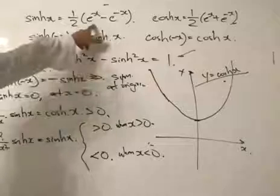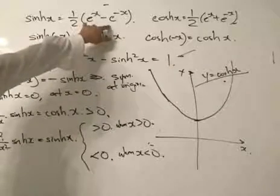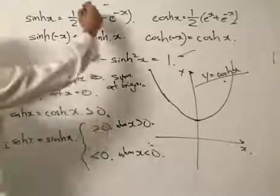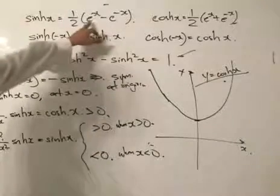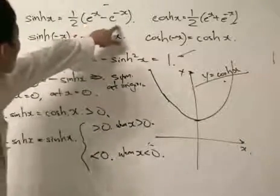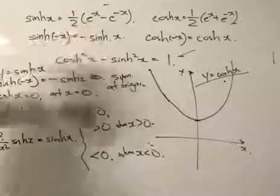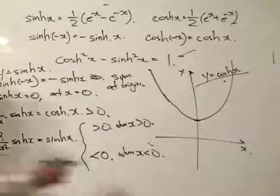So this would be more than 0. So if x is less than 0, I believe this would be greater than this. So we will get a negative number. Let me just check again. Yeah, correct.